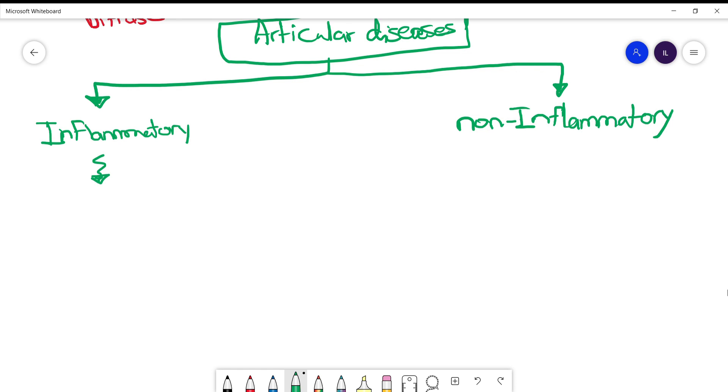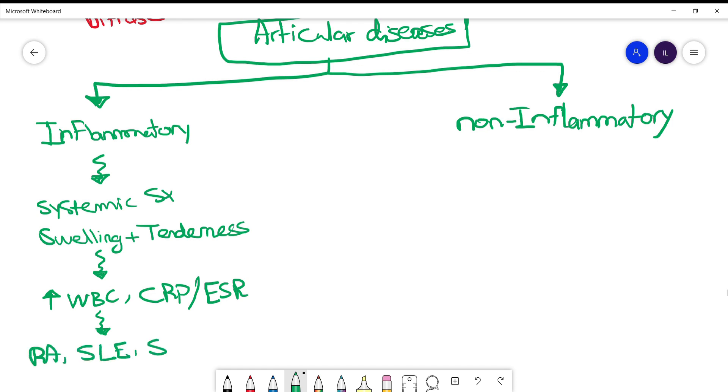Now the inflammatory, since we are talking about inflammation, we will have systemic symptoms and constitutional symptoms as well. Also on the joint itself we will have swelling and tenderness on examination. Then on the labs we will have increased white count and also increased inflammatory markers, CRP and ESR. Examples include rheumatoid arthritis, SLE, spondyloarthropathies, gout, etc.